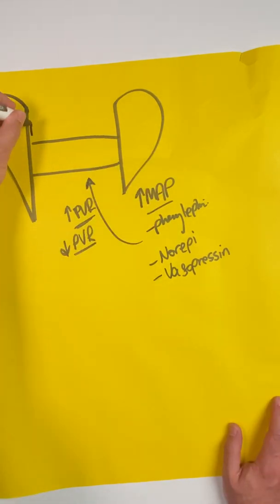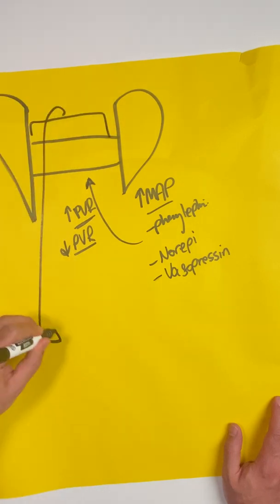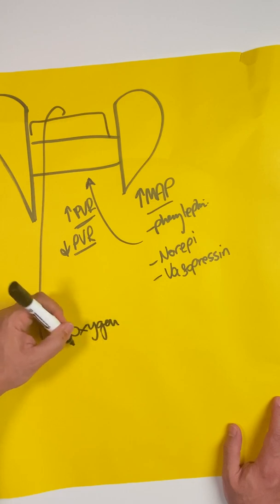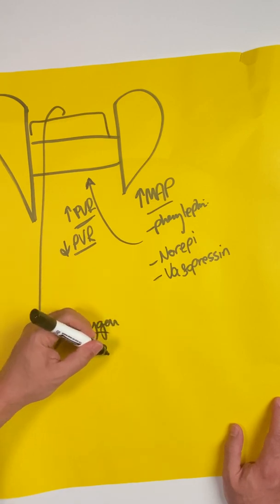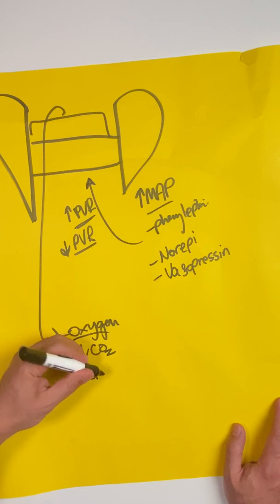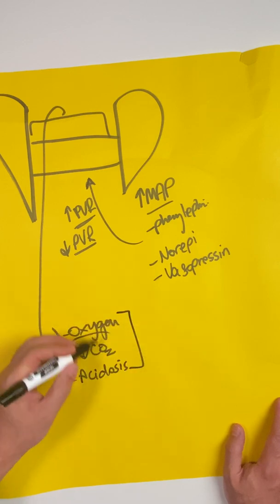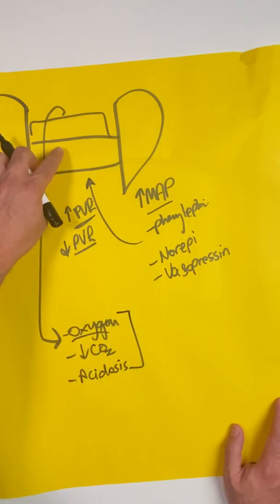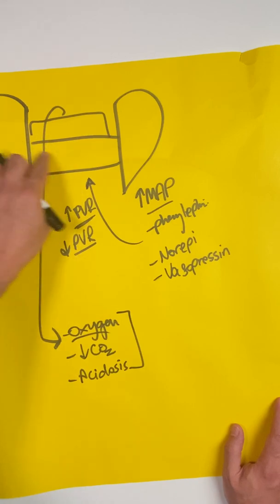The next thing we want to do is we want to work on this system specifically. And the easiest way to do that is to give the person supplemental oxygen if the person's hypoxemic, to ventilate off CO2 if the person is hypercarbic, and minimize acidosis if the person is acidotic. Reversing these problems might cause enough vasodilation to permit blood flow across.